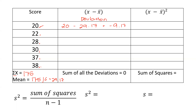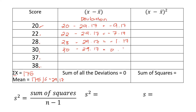We have 22 minus 29.17, giving negative 7.17. Next, 28 minus 29.17 gives negative 1.17. Next, 30 minus 29.17 gives 0.83. Next, 37 minus 29.17 gives 7.83. And finally, 38 minus 29.17 gives 8.83.